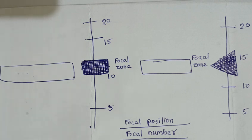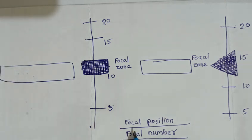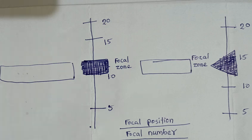Remember, move the focal zone — that is, focal position and focal number — by rotating the knob towards the clockwise or anticlockwise direction. Keep the focal zone on your area of interest and keep the focal number as minimum as possible.